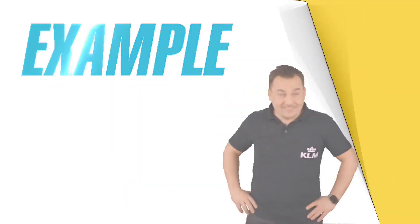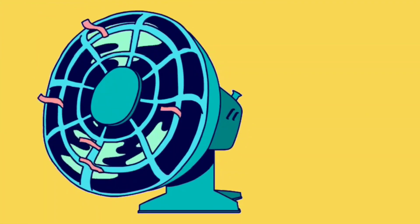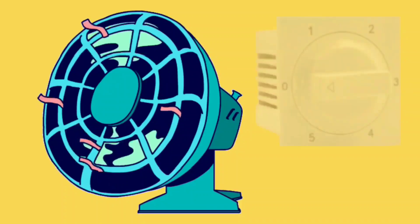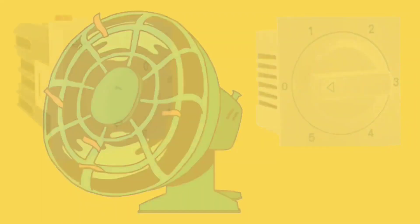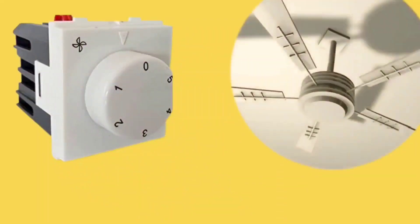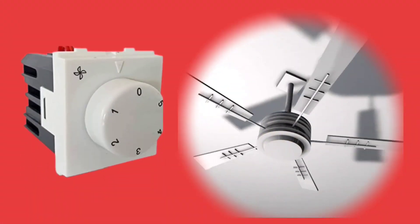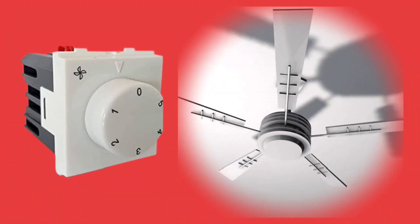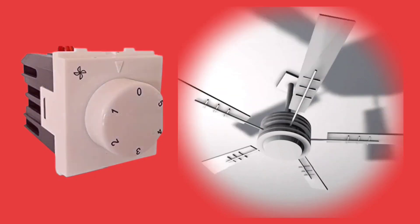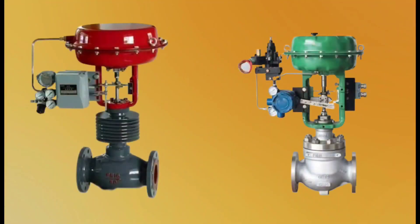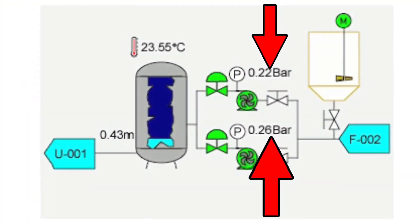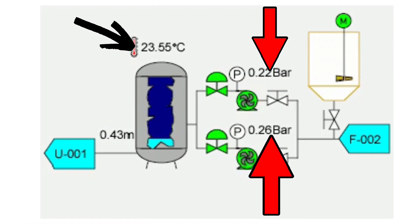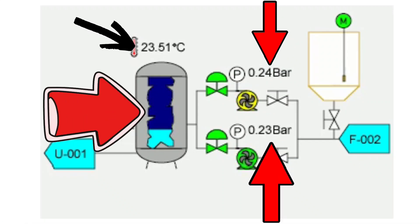Let's understand this with an example. As you must have seen a fan — there is a regulator in it. This regulator controls the speed of the fan; the speed can be decreased or increased. Similarly, control valves control pressure, temperature, level, and flow in industries.